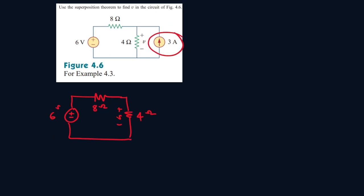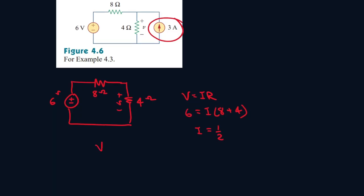So right now we can find the current passing through this wire. V equals IR. 6 and 8 plus 4. And I will be 1 over 2. Now we can find V. V is equal to 4 times 1 over 2, and this gives you 2.